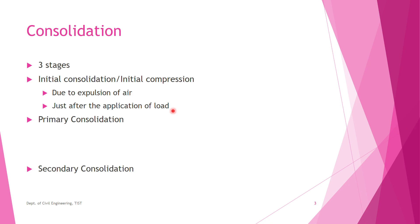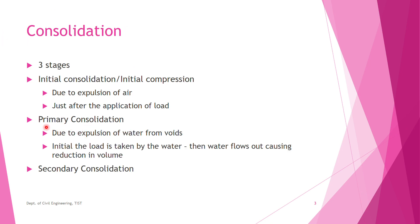After initial consolidation, the remaining phases are soil solids and water. When load is again applied, this water takes up the load and excess pore water pressure is developed. When the water is allowed to go out of the soil, this excess pore water pressure is dissipated, and the flowing out of water causes reduction in volume. This reduction in volume is known as primary consolidation — it is due to the expulsion of water from the voids.